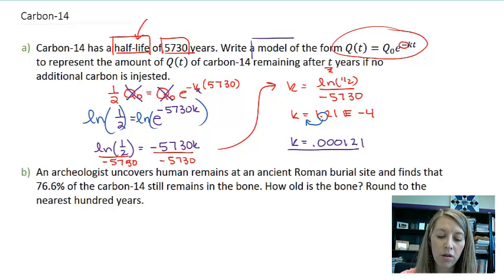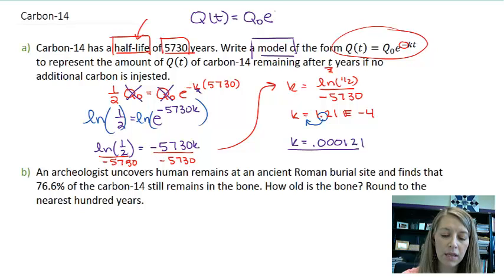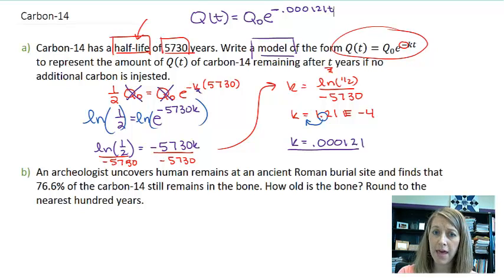And so now I have all of the information to come up with this model. That is q of t is equal to our initial amount q naught e to the negative .000121t. Okay, so now that we know that, that can help us answer part b.